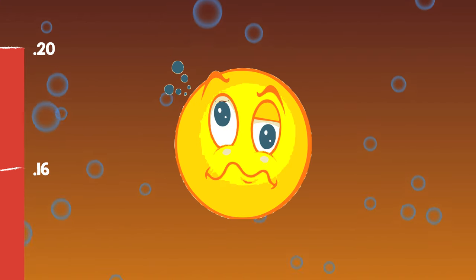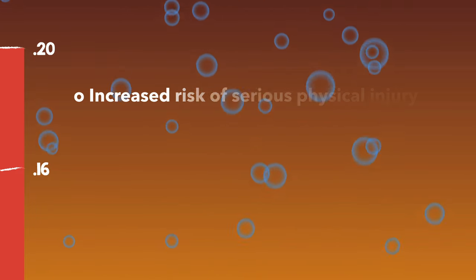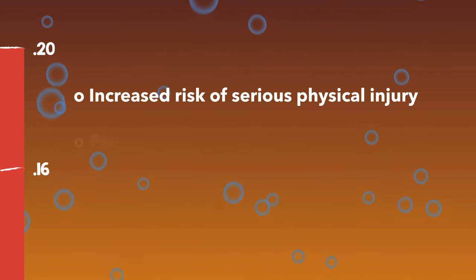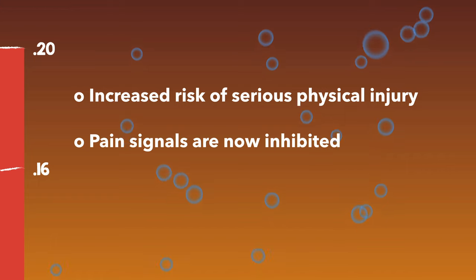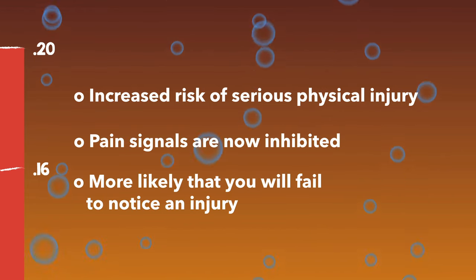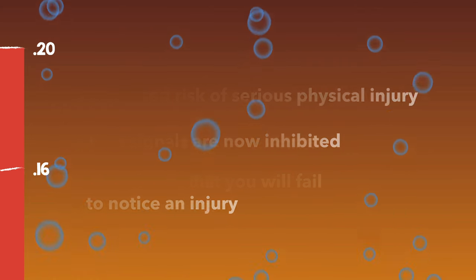Dazed, confused, and generally disoriented, standing and walking seem impossible. This puts you at increased risk of serious physical injury, with the added danger that pain signals are now inhibited, making it more likely that you will fail to notice an injury until the effects of alcohol wear off. At this stage, nausea and vomiting are typical. Memory blackouts are also common.